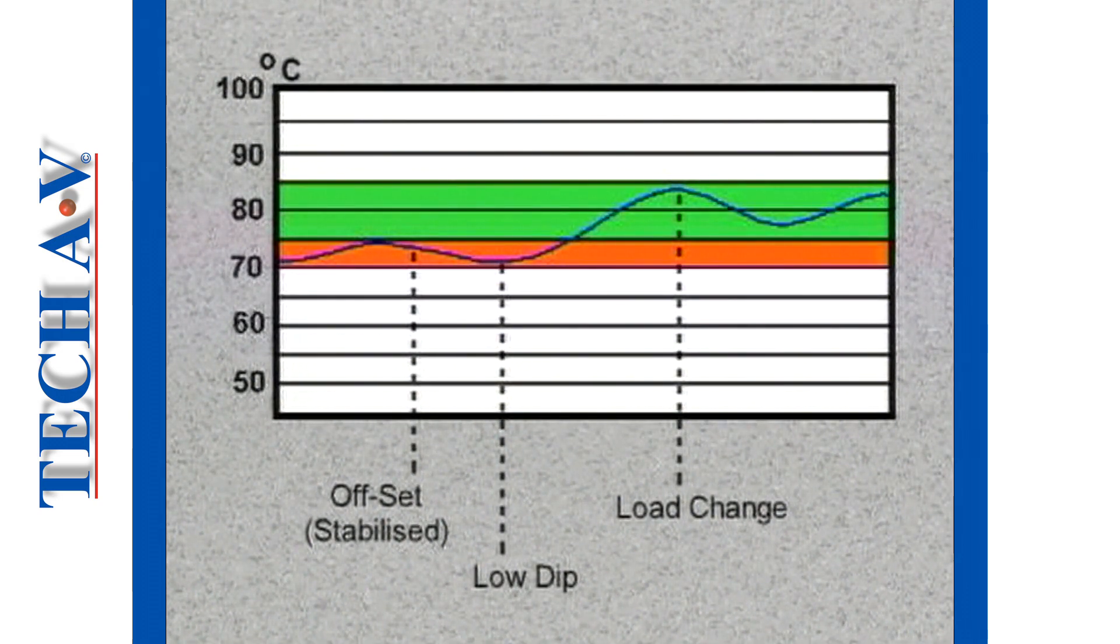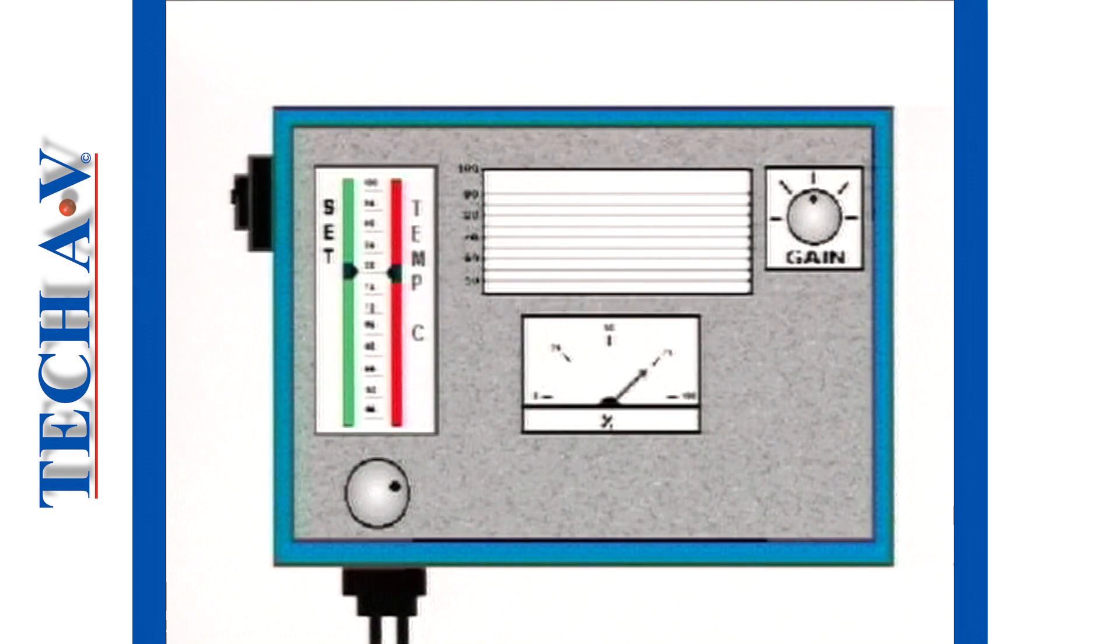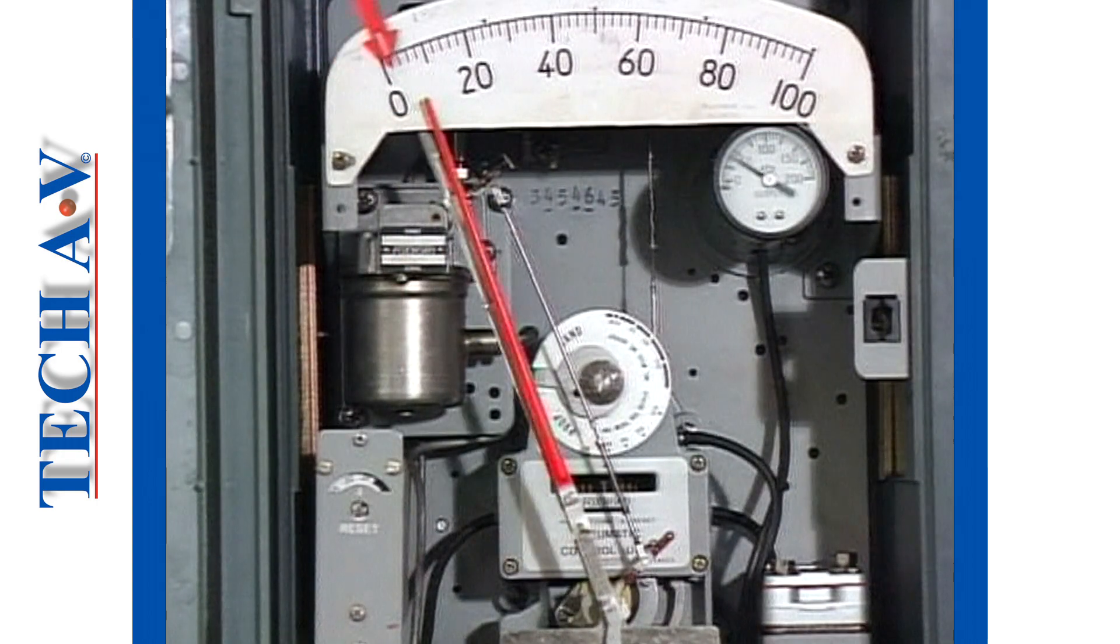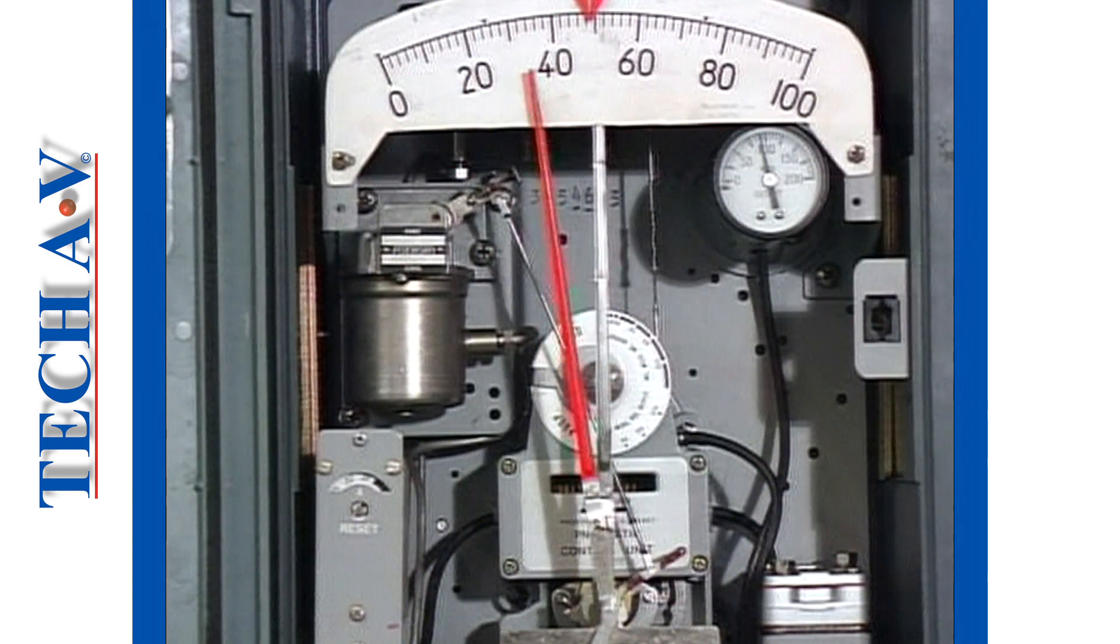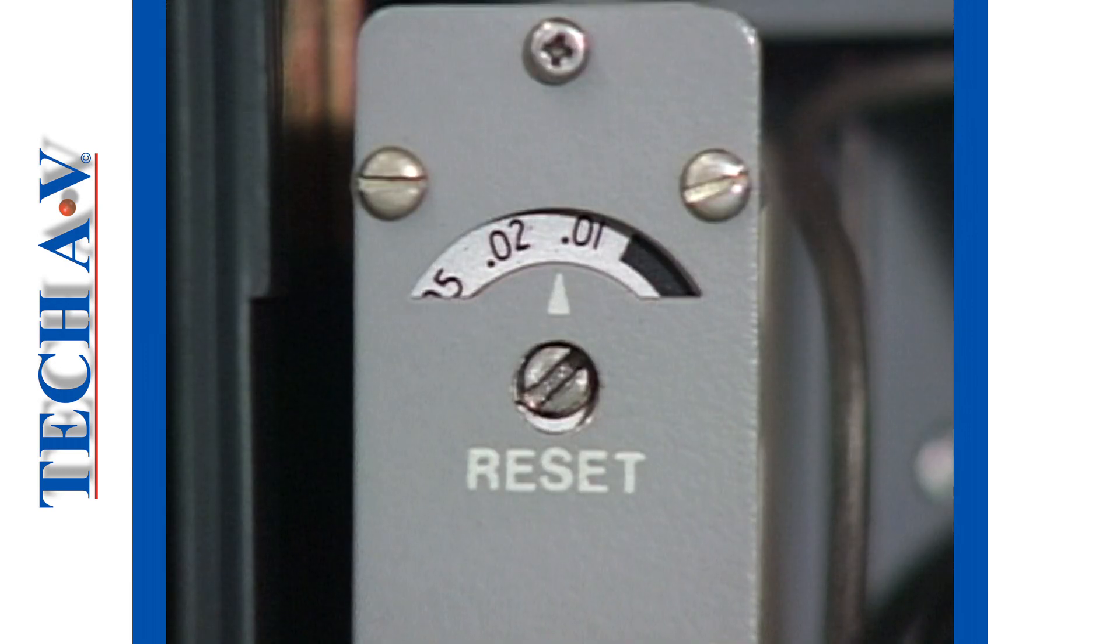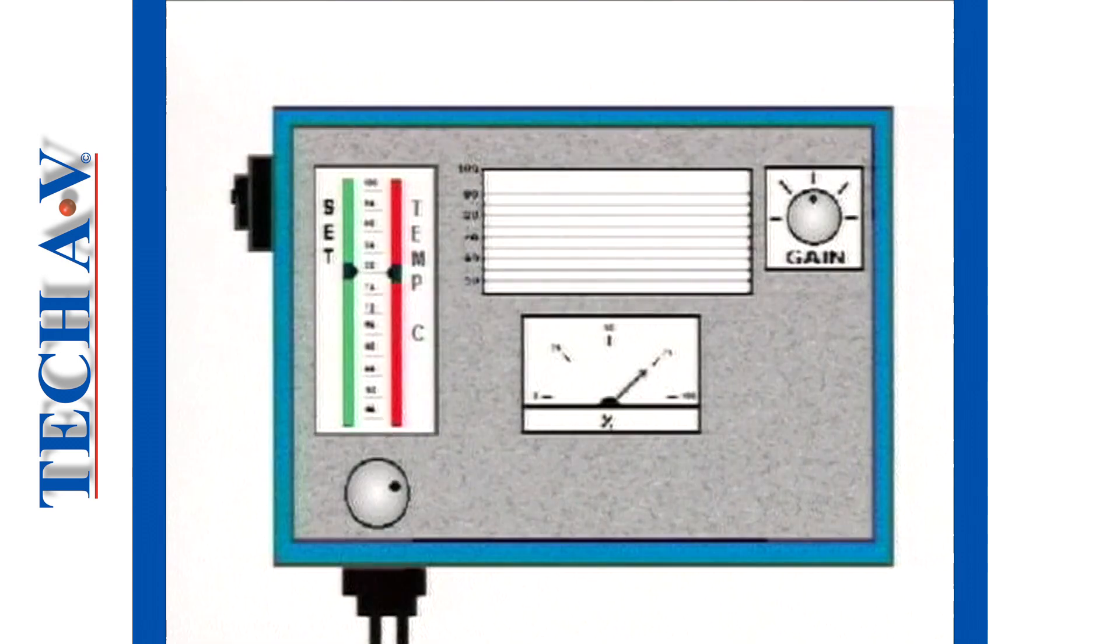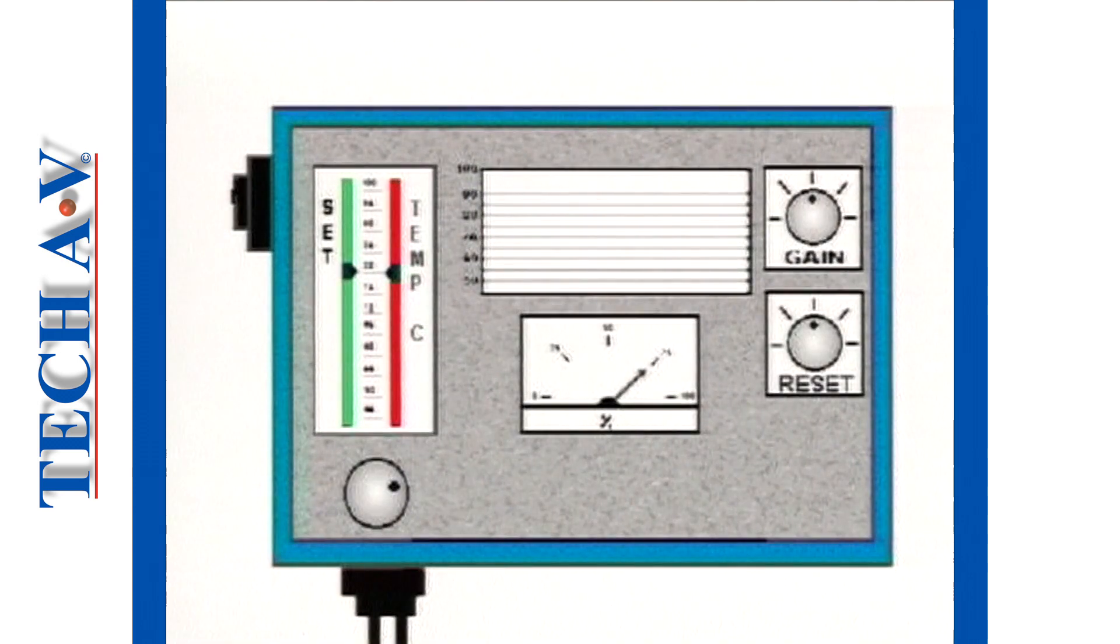In a similar way, an offset will occur to the temperature of a product flow whenever we cause a large and sustained load change. For the reason we've just mentioned, a proportional action unit alone is not sufficient to return the product temperature back to the set point. What we need, in addition, is something that will cause the valve to open beyond that of proportional action whenever a large load change is made. Such a feature is called integral control action, also known as reset action control.